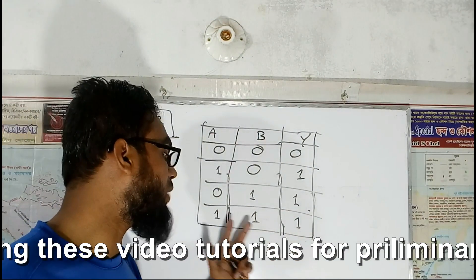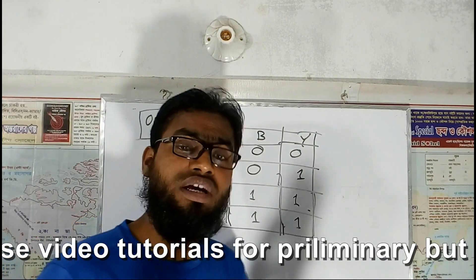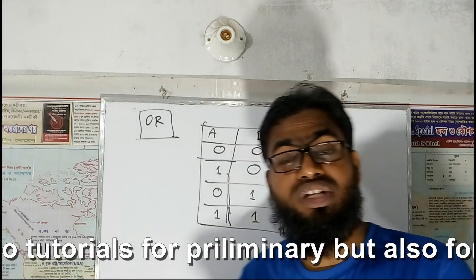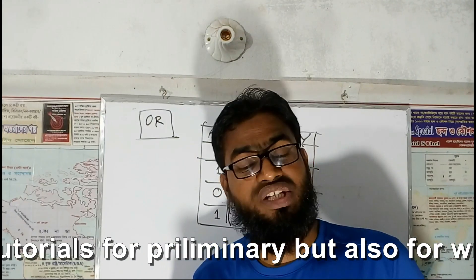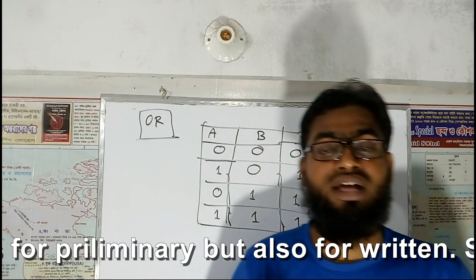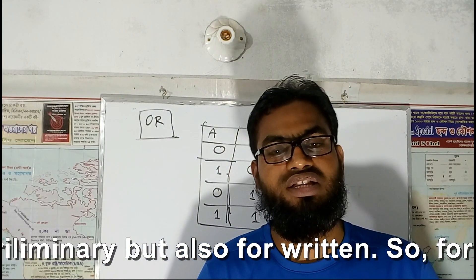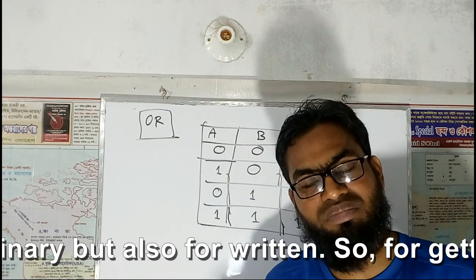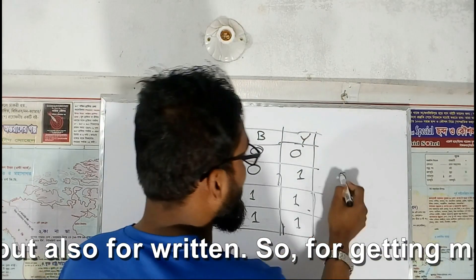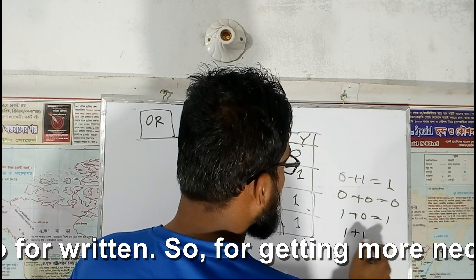Then 1 plus 1 is equal to 1. This is the basic rule. When the input is 1 and the output is 0, then we get an inverted output. When the input is 0, the output is 0. So: 0 plus 0 equals 0, 1 plus 0 equals 1, 1 plus 1 equals 1.